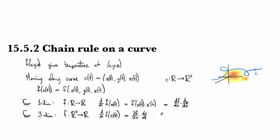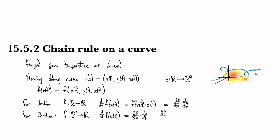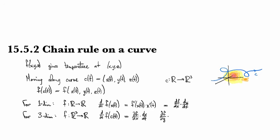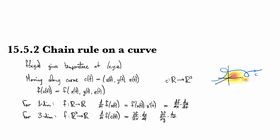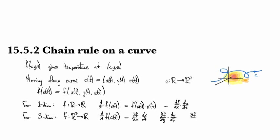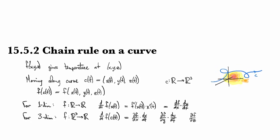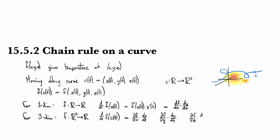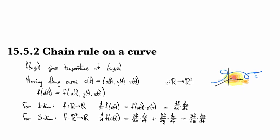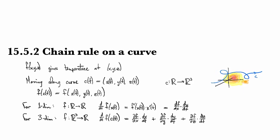We also need to take into account the rate at which F is changing when we change the Y coordinate times the rate at which the Y coordinate is changing, and we also need to take into account the rate of change of F as the Z coordinate changes times the rate at which the Z coordinate is changing, and then we add all of these up to get the total amount.